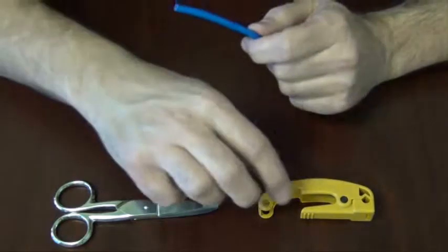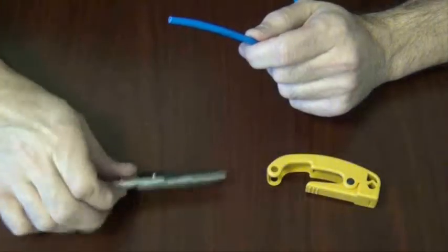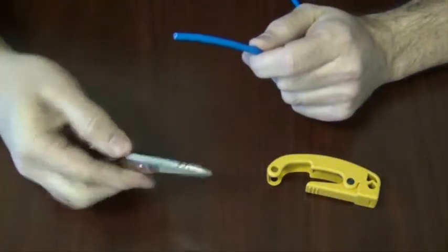The tools you'll need are this Cat5 stripper and a pair of electrician scissors, or crimp scissors sometimes called.